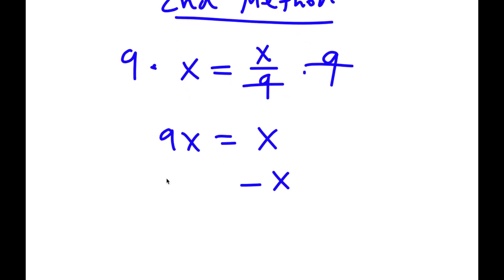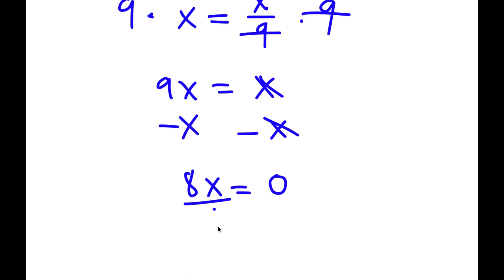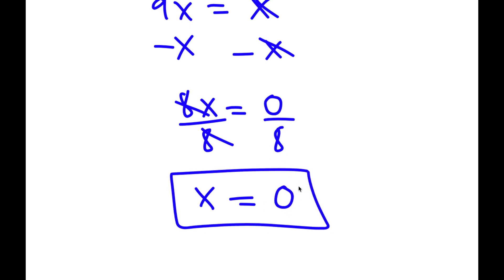Now I'm going to subtract x on both sides. I have 9x minus x, which is 8x, is equal to 0. If I divide both sides by 8, I have x is equal to 0 divided by 8, which is 0. So that is the second method of solving this problem.